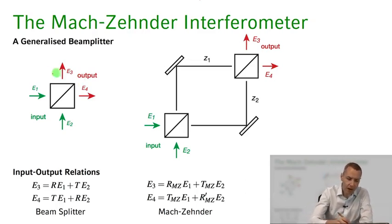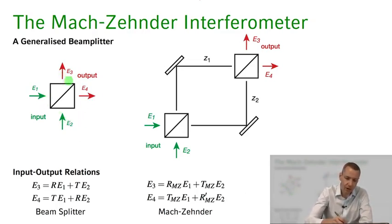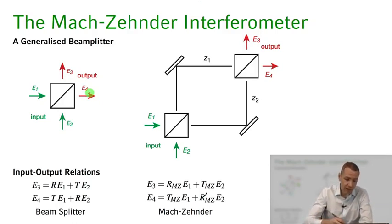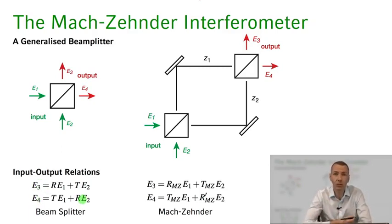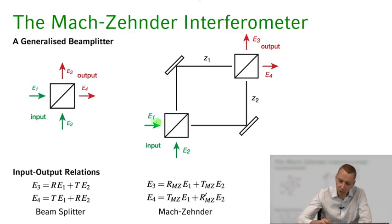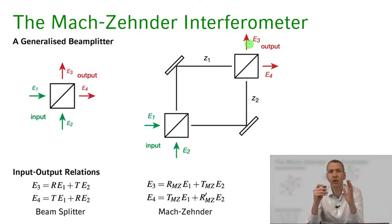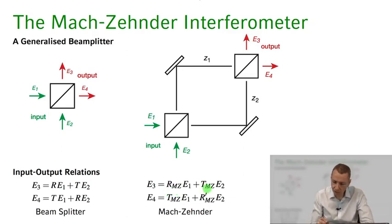Here I've sketched out our beam splitter with classical inputs e1, e2 and classical outputs e3, e4. Thinking of these as complex fields, we can write a relation between the output fields and the input fields through complex reflection and transmission coefficients introduced in the last class. The Mach-Zehnder interferometer also has two input ports and two output ports, so it looks like a generalized beam splitter with generalized reflection and transmission coefficients that relate the input fields to the output fields.